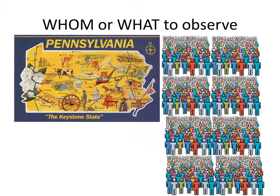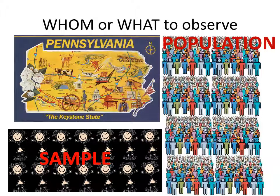So whom or what to observe? We could be looking at all of the public school teachers in Pennsylvania, which could be known as the population. But the population may be so large that researchers may plan only to observe a small subset of the population, which is known as a sample. Researchers will also know how to draw an adequate sample, which is important in conducting valid research.